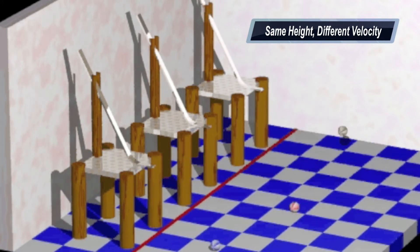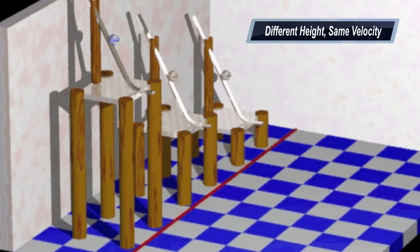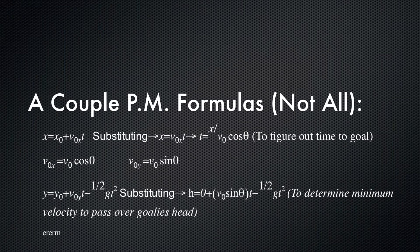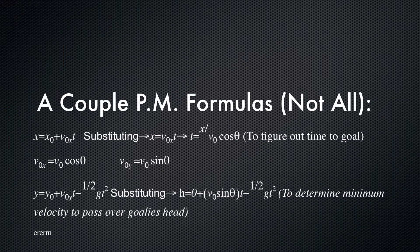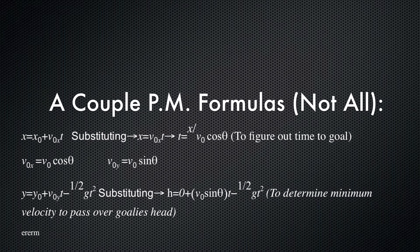For example, if we increase the velocity, the ball will travel further. If we manipulate the y component by varying the height, we will also see a change in the trajectory, even if the ball is at the same velocity. We use different equations given different variables — a different equation would be used to find how far forward the ball goes, its peak height, or even the angle of its trajectory.